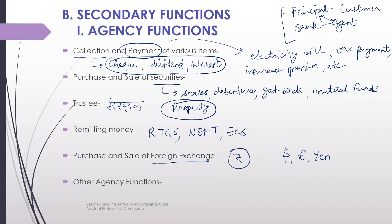The last agency function is other agency functions. In other agency functions, you can give any kind of instructions to the bank — for example, you can get your income tax return filed by telling the bank. The bank, acting as your agent, can file your income tax return. Or if there are trade documents, the commercial bank can receive them on your instructions. So these are the six agency functions of commercial banks.